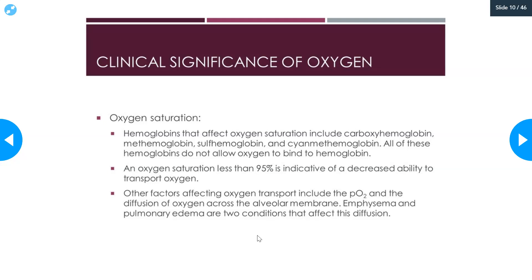Other factors that can affect oxygen transport include the partial pressure of O2 and the diffusion of oxygen across the alveolar membrane. If that membrane is damaged, it can interfere with oxygen crossing over. Emphysema damages the alveoli. Pulmonary edema — swelling and fluid accumulation around the lungs — would also interfere with the diffusion of oxygen. So you could have plenty of hemoglobin to carry the oxygen, but if oxygen can't cross over from the lungs into the blood, that could cause low PO2 readings.